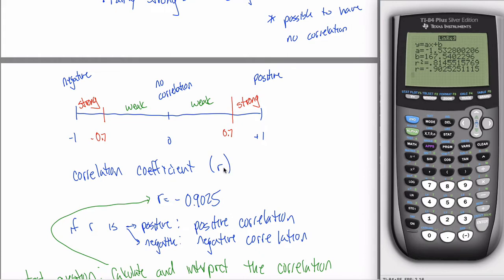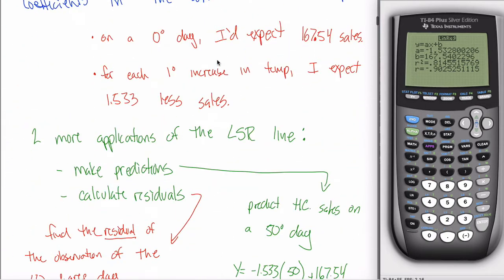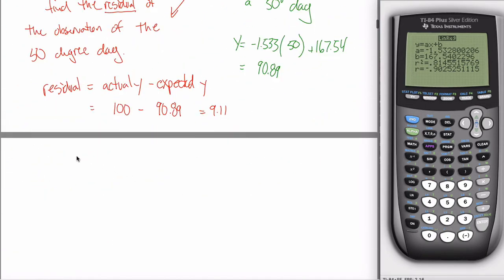If you take that value of r, the correlation coefficient, and square it — meaning multiply it by itself — negative 0.9025 times negative 0.9025 gives you a positive number, because a negative times a negative is a positive. So r-squared is always going to be a positive number. In this case it would be approximately 0.8146. That thing has a name and an interpretation, and that's what I want to get into in this video.